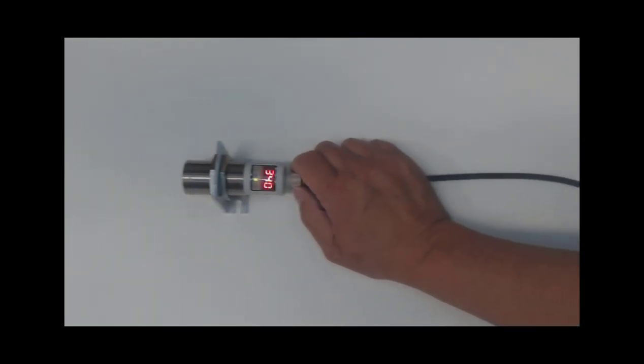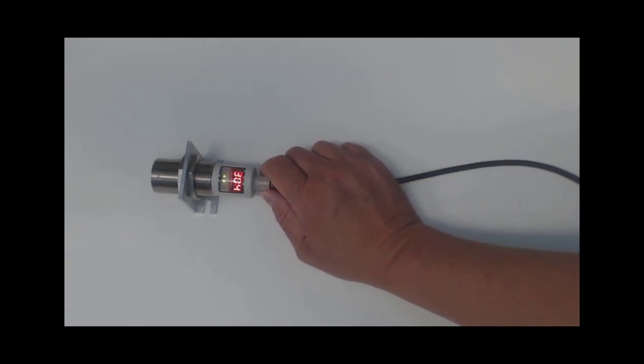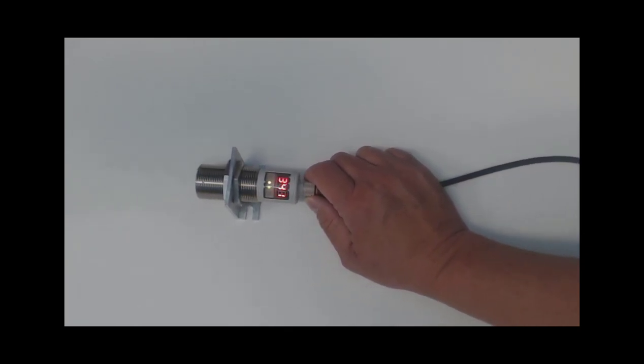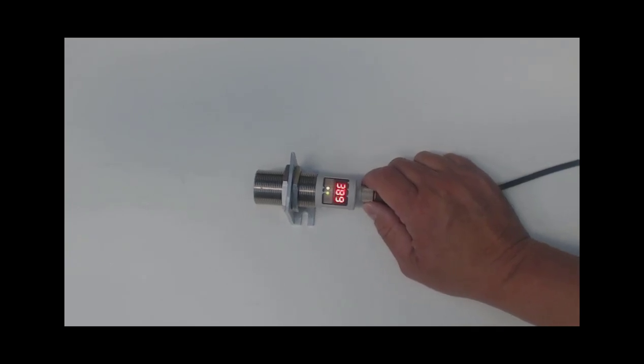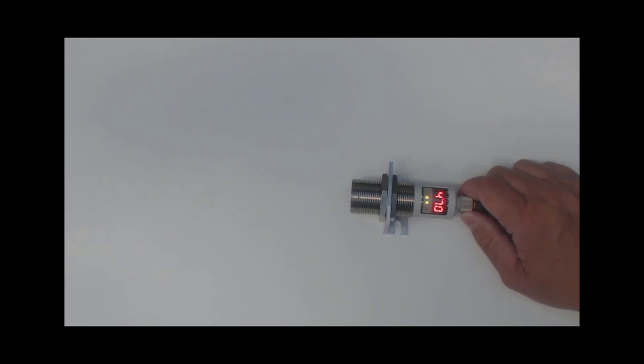And now we've taught that for 450. So we'll bring it close and you can see the display. Look at the top LED go from green to yellow when we get past 300 and the bottom one when we get past 450 goes from green to yellow.